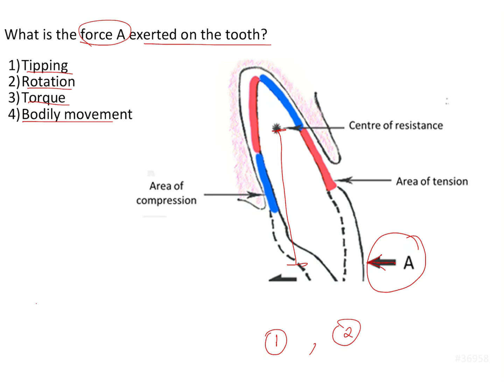Whenever there is a situation where a single force is acting on the tooth away from the center of resistance, the tooth is going to undergo something known as a moment. The moment is nothing but the force applied onto the tooth multiplied by the distance of the force from the center of resistance. The center of resistance is a point where if force is applied through it, it brings about bodily movement. But here the force is not passing through the center of resistance, so the tooth is going to experience a rotational tendency.